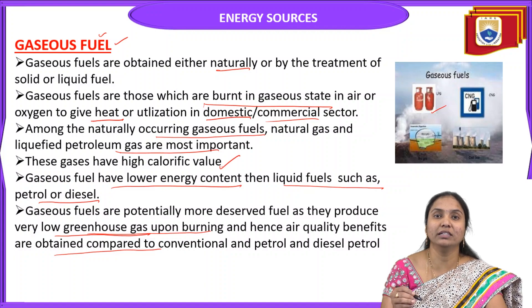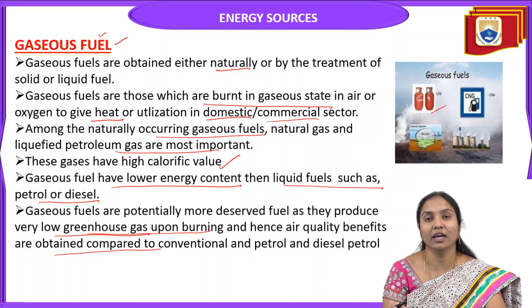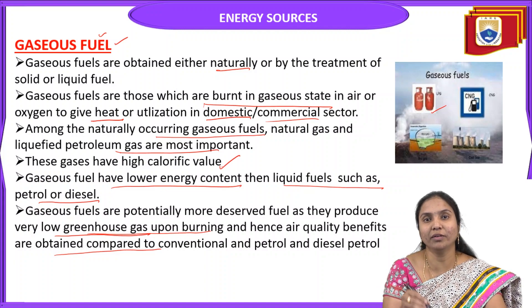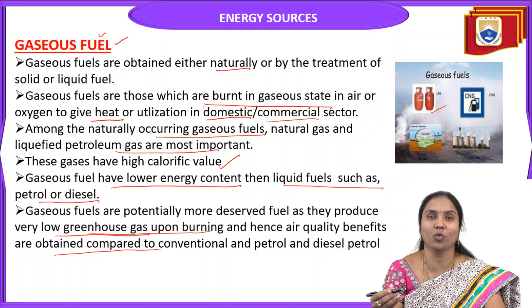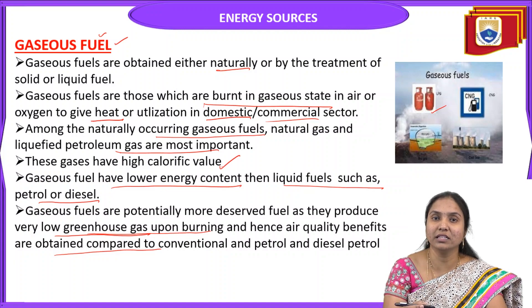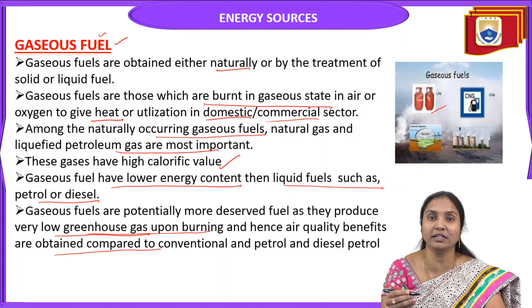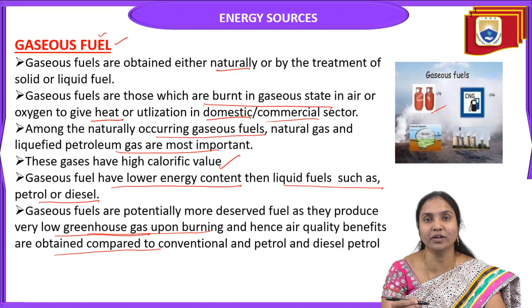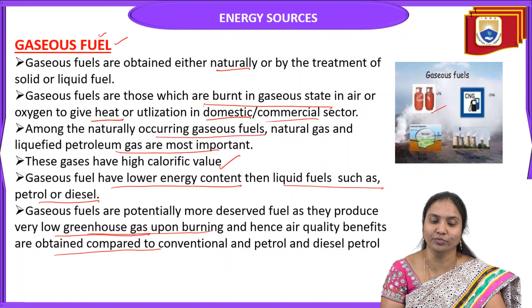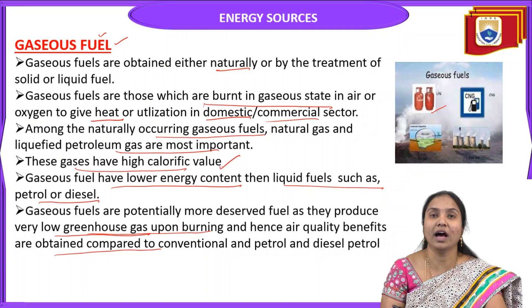Generally, gaseous fuels are classified into two types: primary and secondary. Primary fuels are obtained from nature. Secondary fuels include examples like coal gas or water gas. Based on physical state, these fuels are sub-classified into three types: solid, liquid, and gaseous. Gaseous fuels burn in gaseous state in the presence of oxygen or air to produce heat energy, which is used for domestic as well as industrial purposes, and these gases have high calorific value.